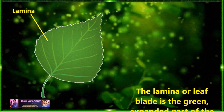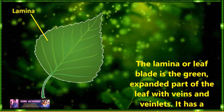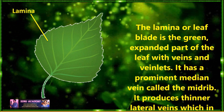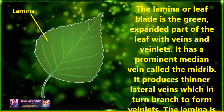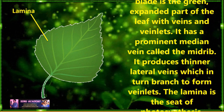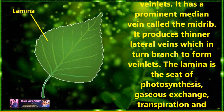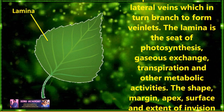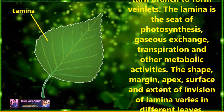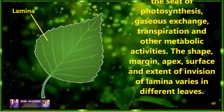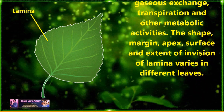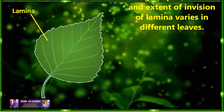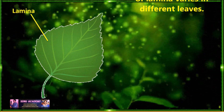Lamina is also called epipodium. The lamina or leaf blade is the green, expanded part of the leaf with veins and veinlets. It has a prominent median vein called the midrib. It supports the thinner lateral veins which in turn branch to form veinlets. The lamina is the site of photosynthesis, gaseous exchange, transpiration and other metabolic activities. The shape of margin, apex, surface and extent of incision of lamina varies in different leaves.